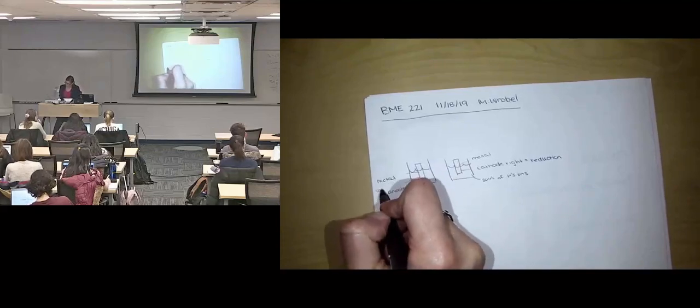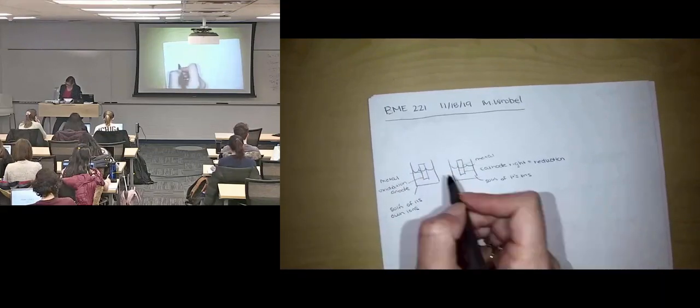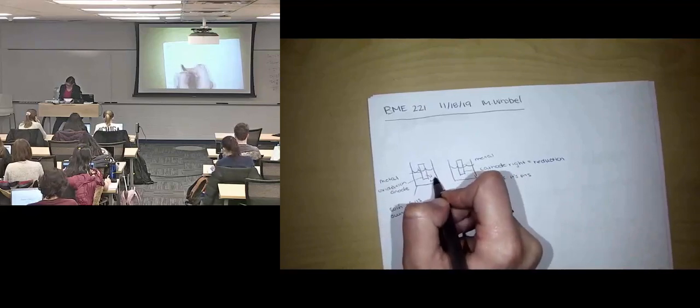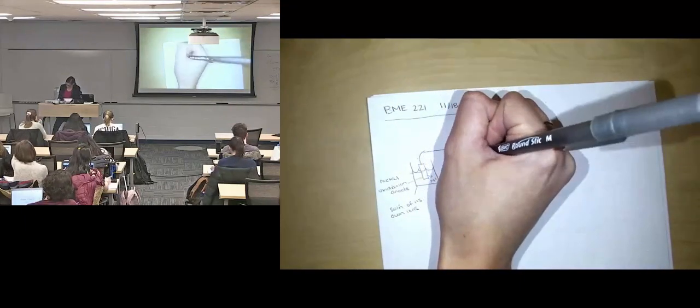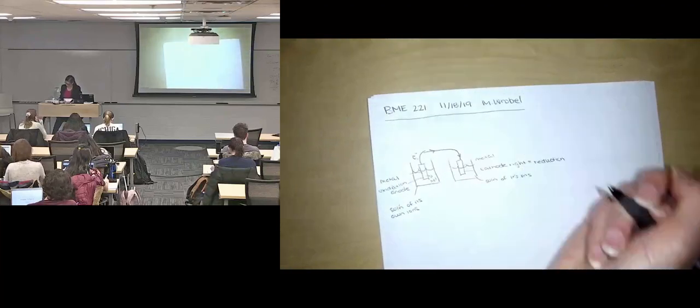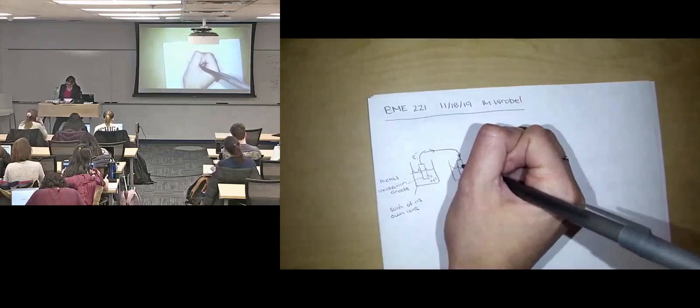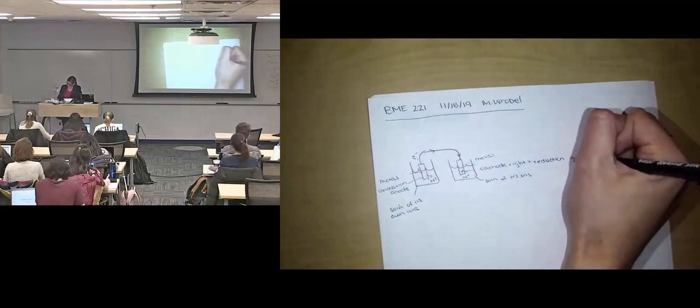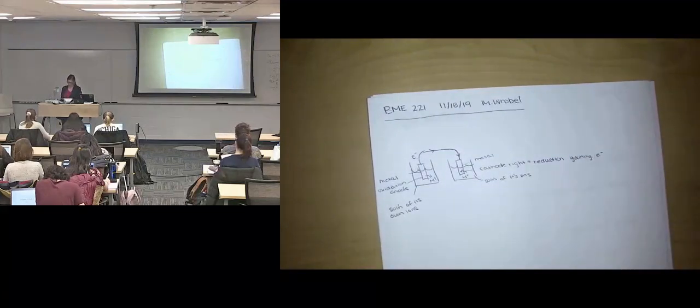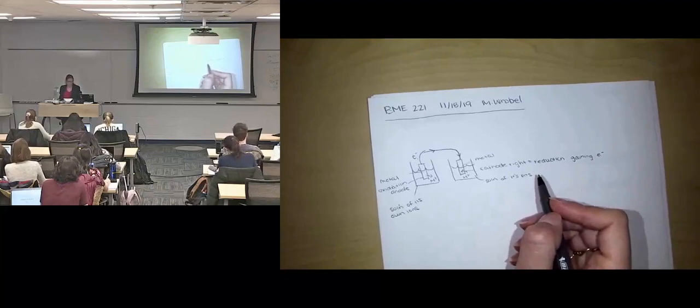On this side, this is the metal that's being oxidized, which means it's giving up an electron. So here metal ions are popping off into solution, and the electrons are flowing up a wire over to here. And then on this side, ions in solution are taking up these electrons and going back onto our cathode. Gaining an electron, losing an electron.